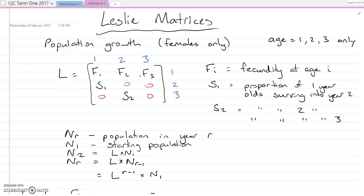The other numbers, we have four zeros in here, but then we have S1 and S2. This is going to be the proportion. Let's say if it was 50%, you would have a 0.5, because this S1 would represent the number of one-year-olds that survive into the next year.